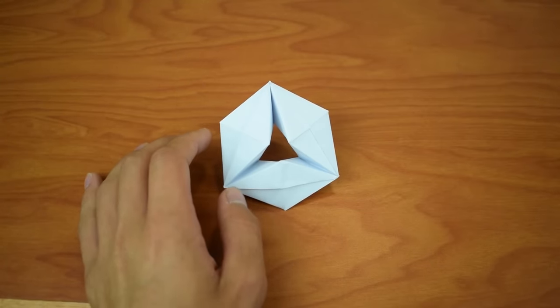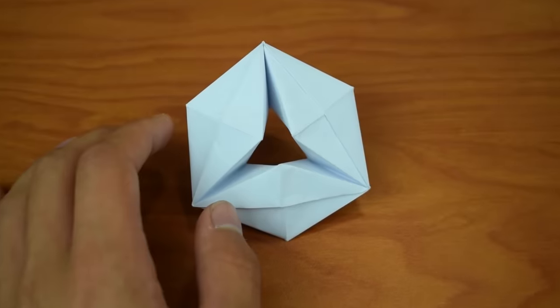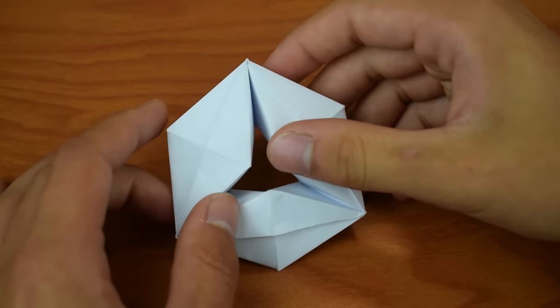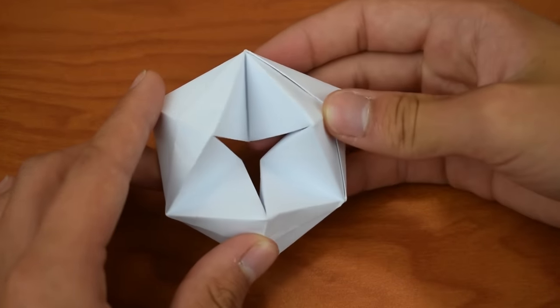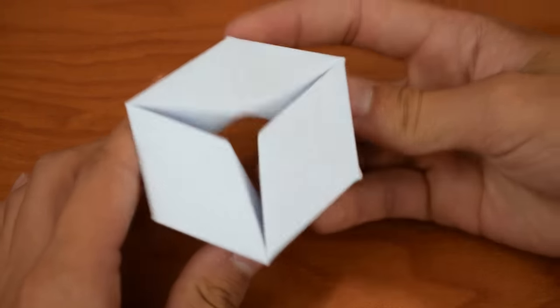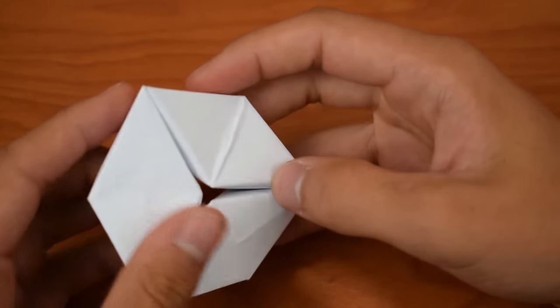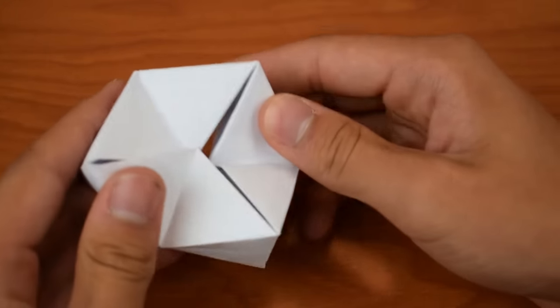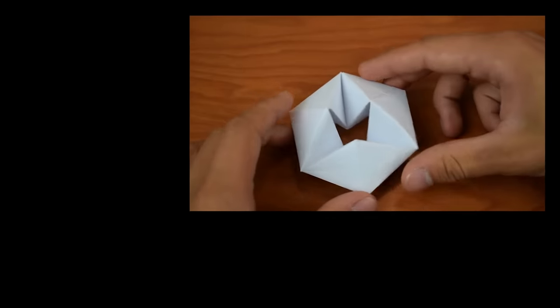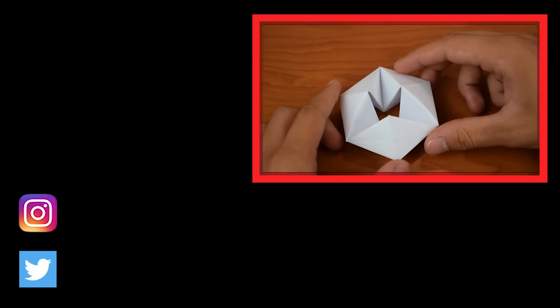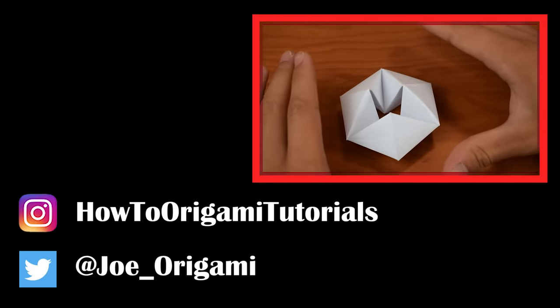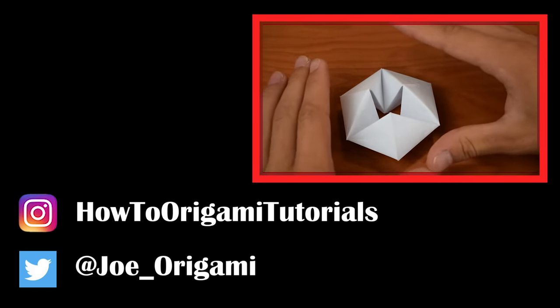So that is how you make the origami flexagon. And it is a pretty cool shape, if I do say so myself. It's just something that's a lot of fun to make and a lot of fun to show people and impress people. And it's something that's not too difficult so you can also teach them. Lot of fun. So I hope you enjoyed this tutorial. I hope you're having a great day. And thank you for watching. I will see you in the next video.